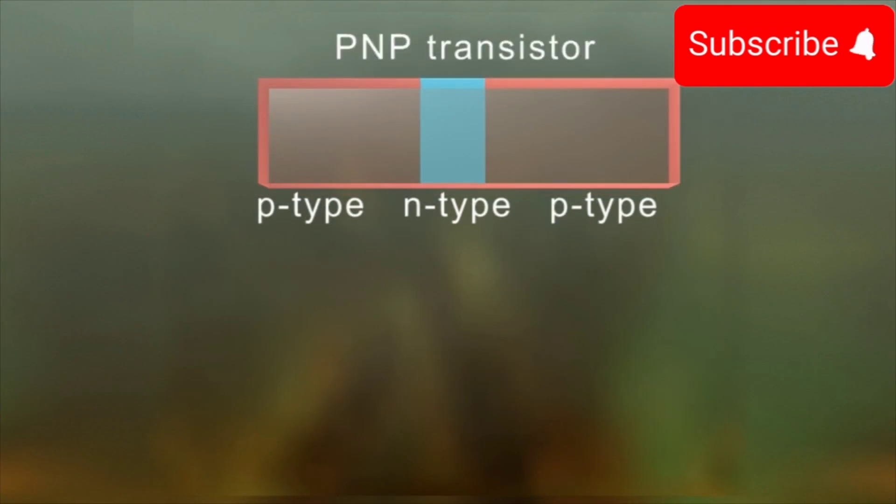PNP transistor: In this type of transistor, there is a thin wafer of N-type semiconductor between two P-type semiconducting materials.